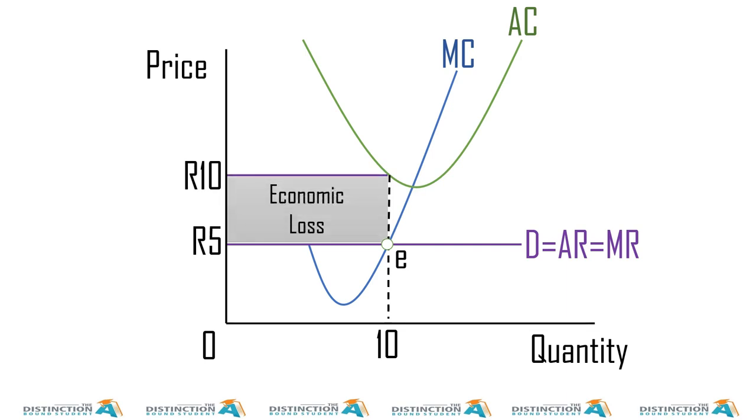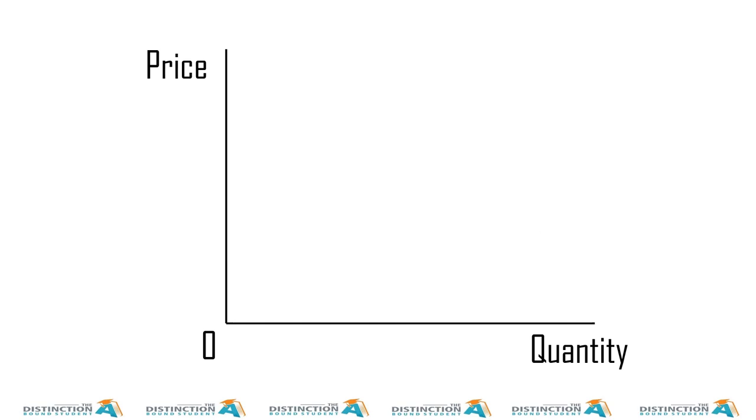So it's common sense here. Yes, it's 10. So this firm is making an economic loss of five rand per unit. And then if we say five times 10, so this firm is making 50 rand loss, or 50 rand economic loss.